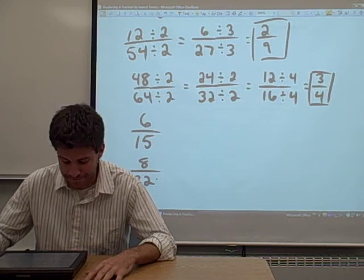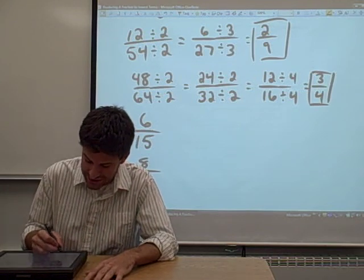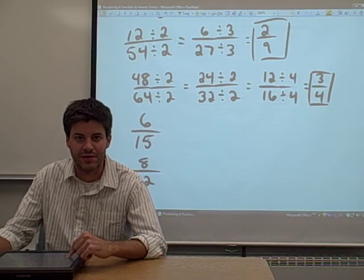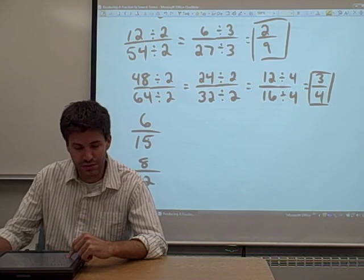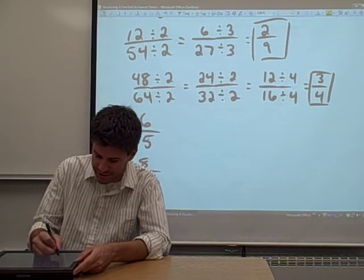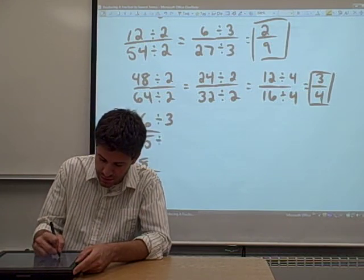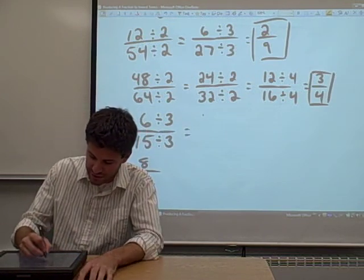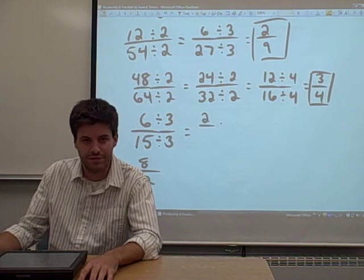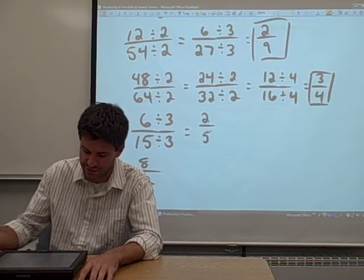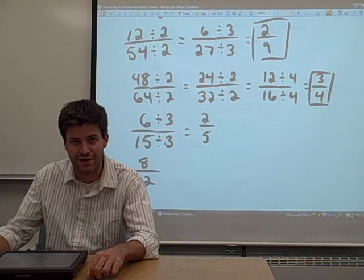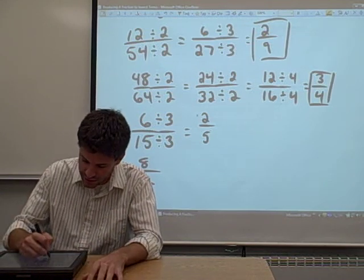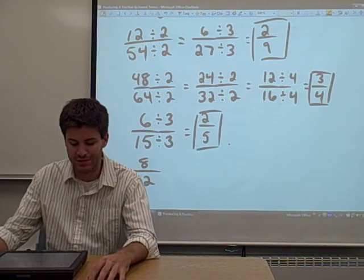Alright, let's give these a shot. 6 and 15. You have to find a number that will divide 6 and 15 evenly. 2 doesn't work. Does 3 work? I think 3 will actually work. So you can divide both the numerator and the denominator by 3. 6 divided by 3 is 2. 15 divided by 3 equals 5. Is there a number that will divide both 2 and 5 evenly? And other than 1, the answer is no. So 2 fifths is our answer.